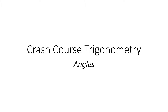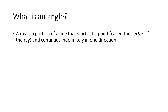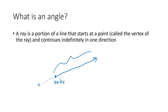To get us started we're going to start talking about angles. But before we can define what an angle is we need to talk about a ray. A ray is a portion of a line that starts at a point, which is called the vertex of the ray, and continues indefinitely in one direction. It's basically half a line — here's the vertex and then all of this is what we call a ray.